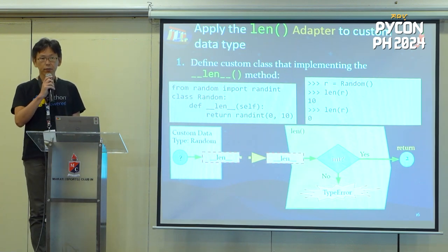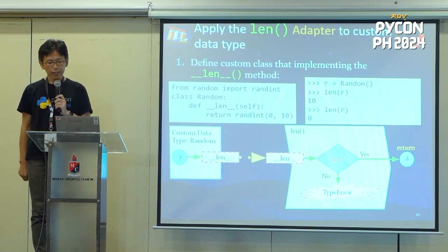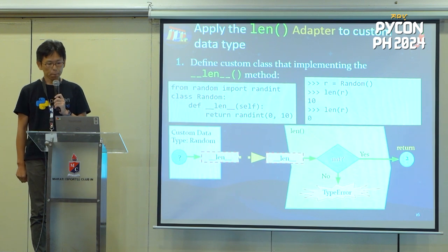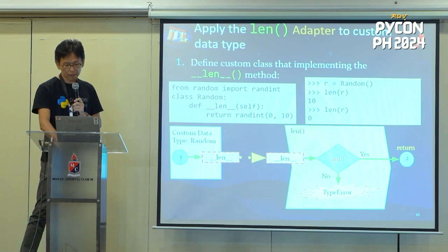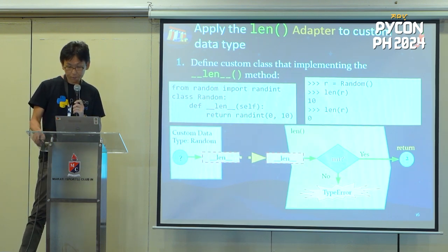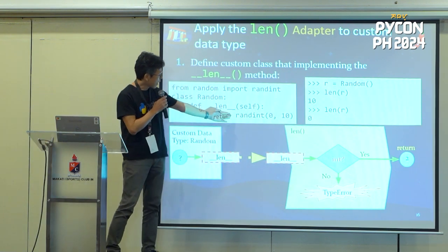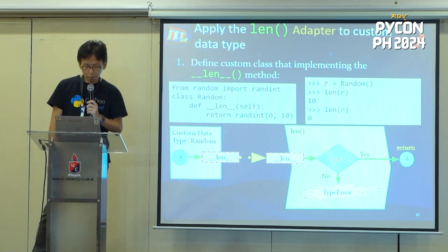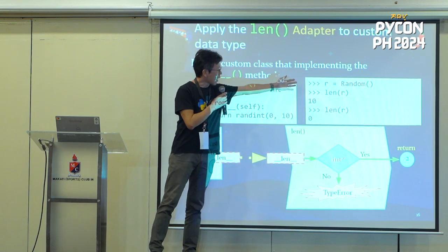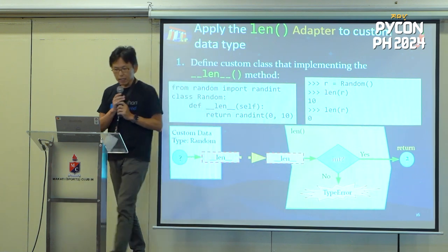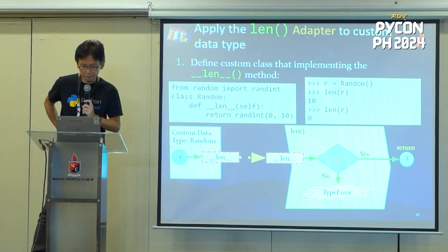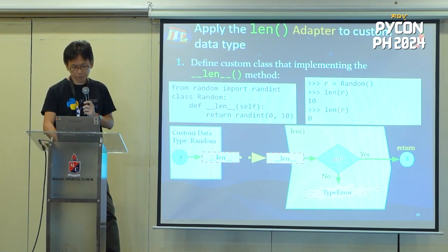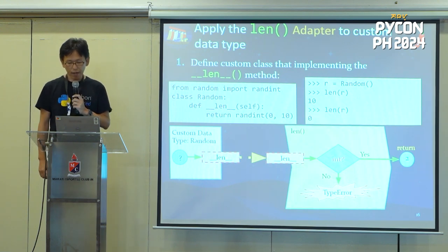Now let's try the len adapter with a custom data type. As mentioned, if there is a `__len__` method, it can work with the len adapter. So implementing `__len__` will make it work. This random custom class returns a random value — `randint(0, 10)` — from its `__len__` method. So it works, but `len(r)` returns another value each time. This is not a useful class, but it works.